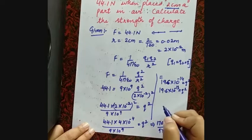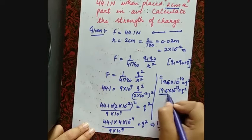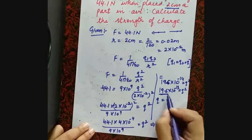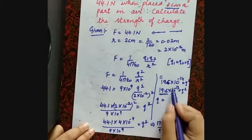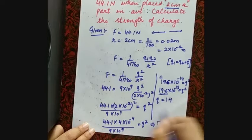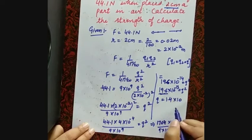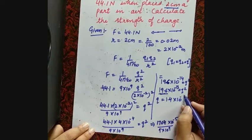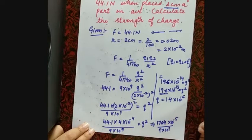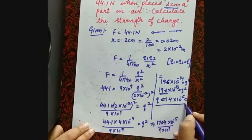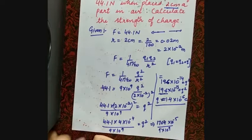Taking the square root: Q = √(19.6×10⁻¹³). The square root of 19.6 is approximately 1.4, and the square root of 10⁻¹³ ≈ 10⁻⁶. So the charge Q ≈ 1.4×10⁻⁶ coulombs. I hope you got it.